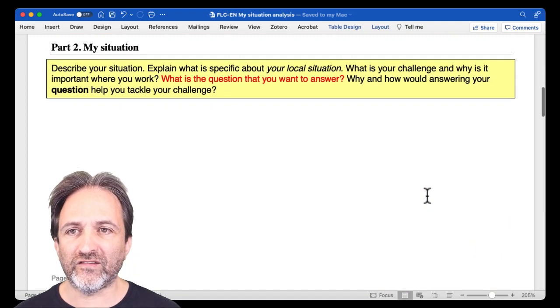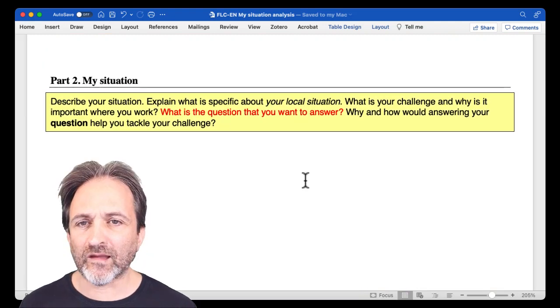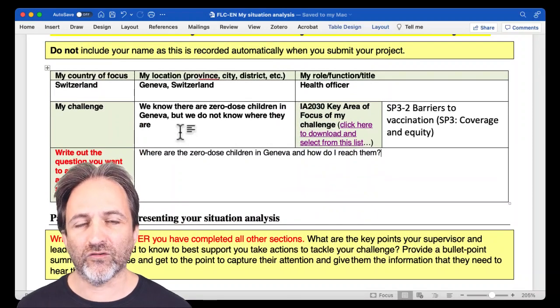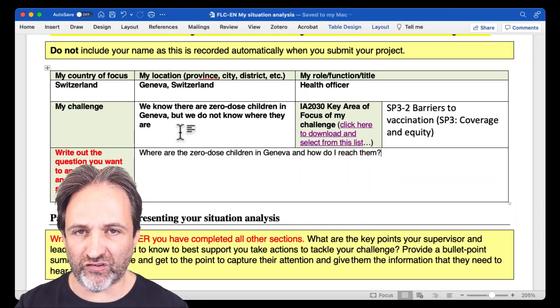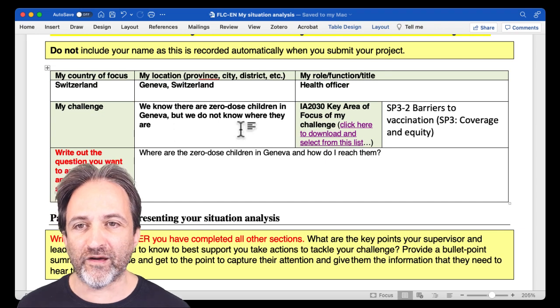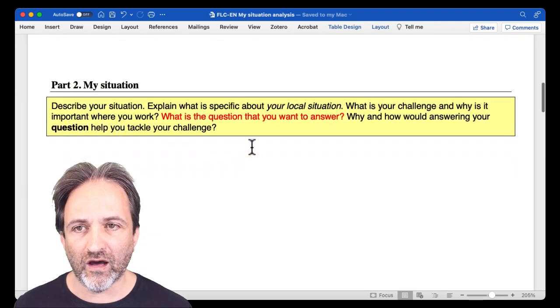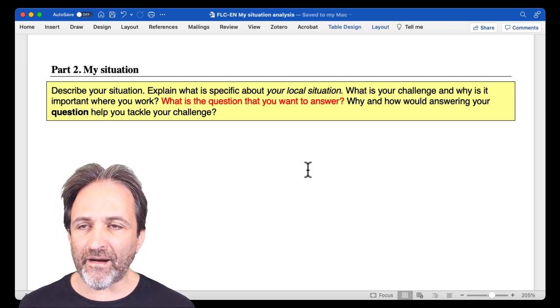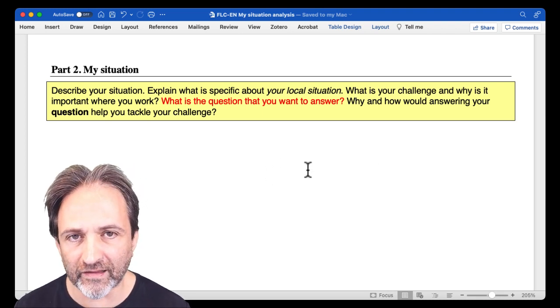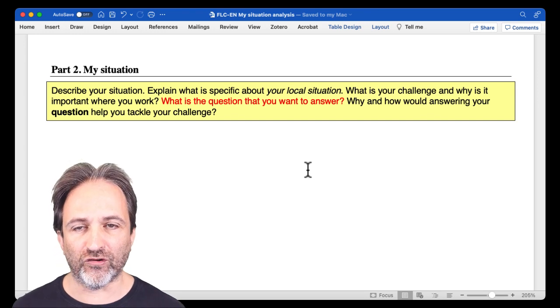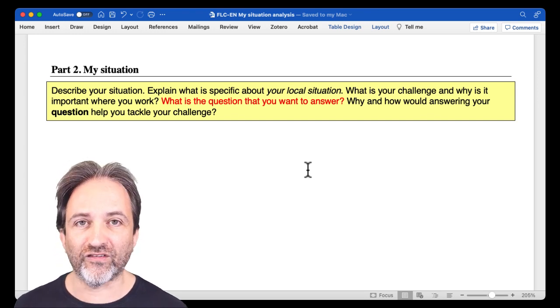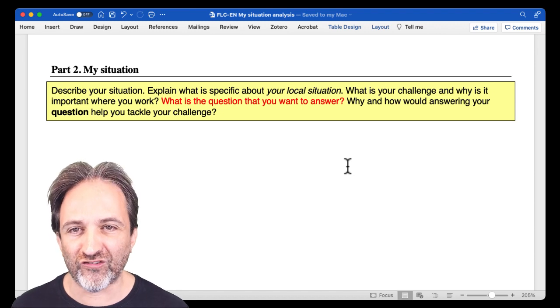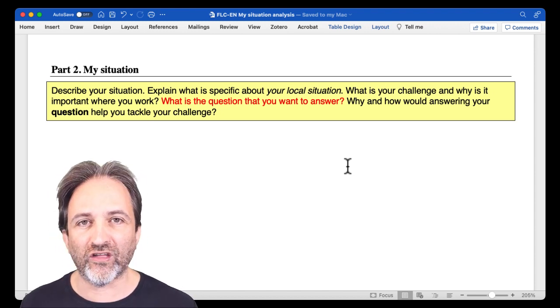And then in the My Situation section, actually, some of the information you're going to repeat from what you put in the box. So it can be your choice. You may say it's fine, I'm fine in the box, or your narrative may flow better if you repeat information. But My Situation is about spelling out, writing out everything you know, everything you don't know. And then, of course, everything you know, everything you don't know in relation to your local situation, to your challenge, to the question that you want to answer.